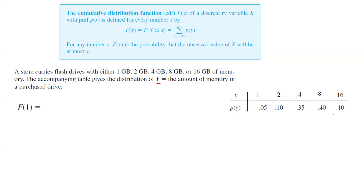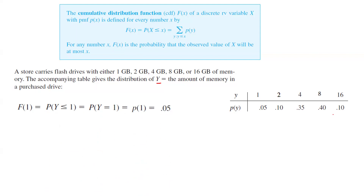If I ask you to find F(1), it means you need to find the probability that Y is less than or equal to 1, which is basically the probability that Y equals 1, because we don't have any other number less than 1. That probability is just 5%.